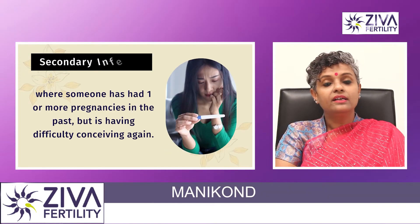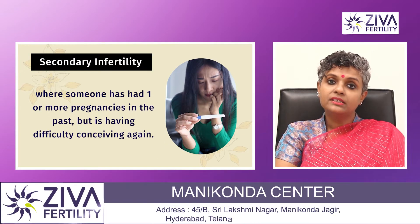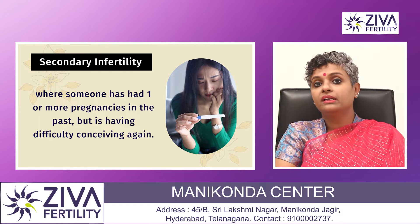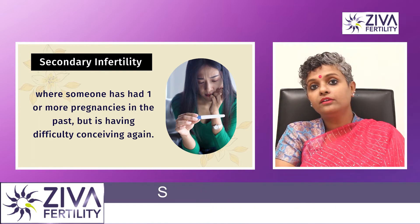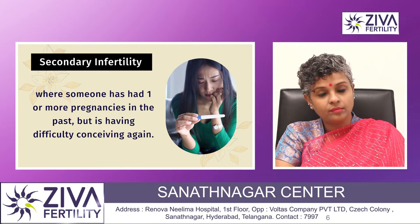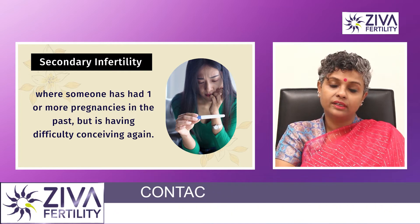The second kind is secondary infertility. Secondary infertility is when a pregnancy has already occurred and you're not able to achieve pregnancy the next time — it is called secondary infertility.